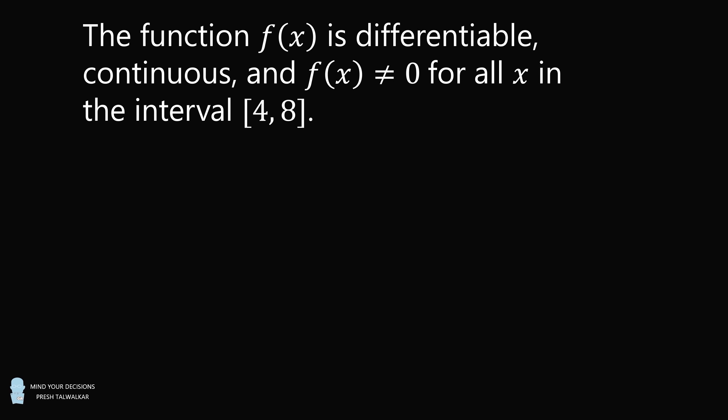Hey, this is Preshto-Walker. The function f is differentiable, continuous, and f is not equal to 0 for all values of x in the interval [4, 8].